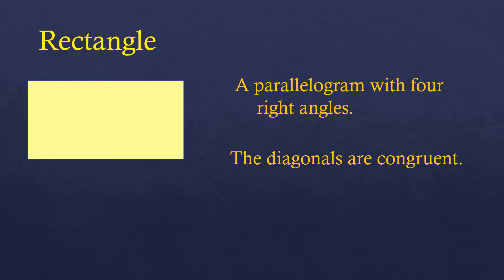The rectangle is simply a parallelogram with four right angles and congruent diagonals. They bisect each other because it is a parallelogram, and at the same time they are equal in measure — unlike a general parallelogram where the diagonals are not necessarily equal in length, but at least they cut into half with each other, which is why we call it bisect.